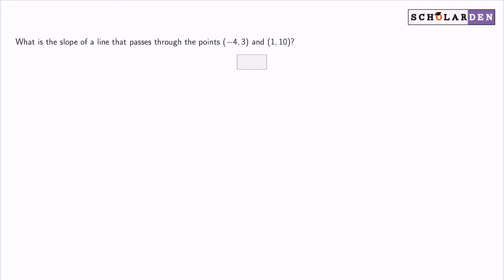What is the slope of a line that passes through the points negative 4, 3 and 1, 10? The answer to this question is 7 fifths.